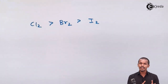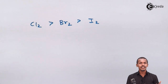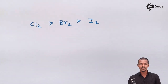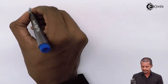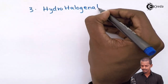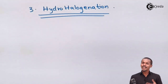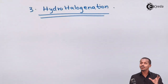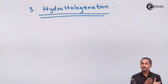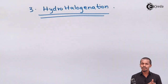We have now discussed two chemical properties of alkenes: hydrogenation and halogenation. Now let us talk about hydrohalogenation — the third chemical property. Previously we used only a hydrogen molecule or only a halogen molecule, but in hydrohalogenation we use a hydrogen halide such as HCl, HBr, or HI, making it also an addition reaction.